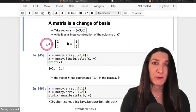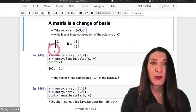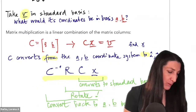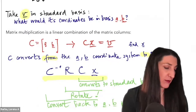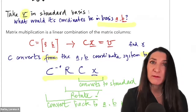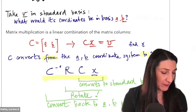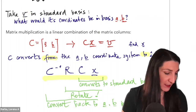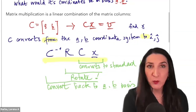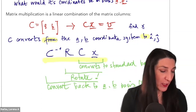We concretely defined these two vectors a and b, and then the matrix C was the matrix formed with these two vectors as columns. We ask: what would be the coordinates of this vector v if we were to express it in the basis a, b? Because a and b are the columns of C, and matrix multiplication is a linear combination of the matrix columns, the question of what the coordinates would be in basis a, b is the same as asking: